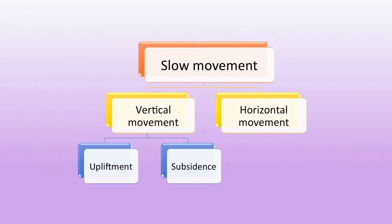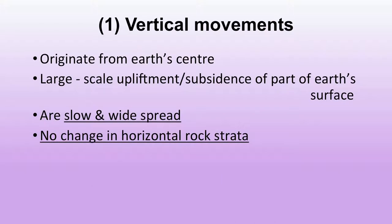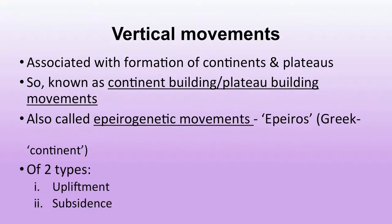Slow movements are of two types: vertical and horizontal. Vertical movement originates from the earth's center and involves large-scale upliftment or subsidence of part of the earth's surface. It is slow, widespread, with no change in horizontal rock strata. Vertical movements are associated with formation of continents and plateaus, so they are also known as continent-building or plateau-building movements, and are called epeirogenetic movements. Epeiros in Greek means continent.